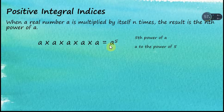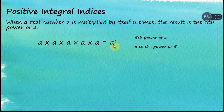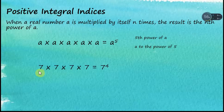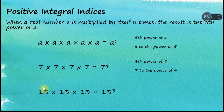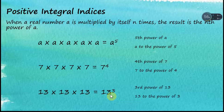This is an index number — a number raised to a certain power. If the power is five, it means the number is multiplied by itself five times. Another example: seven multiplied by itself four times becomes seven to the power of four, the fourth power of seven. And 13 multiplied by itself three times is the third power of 13.